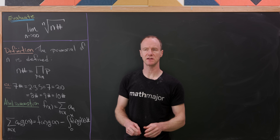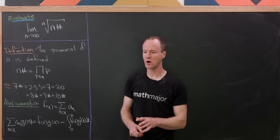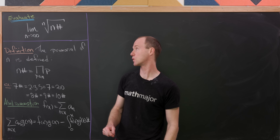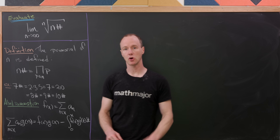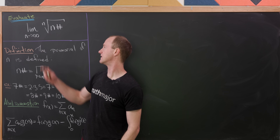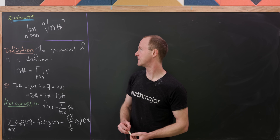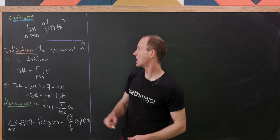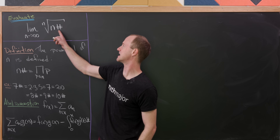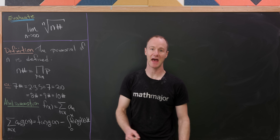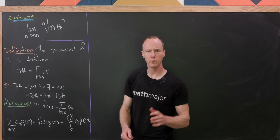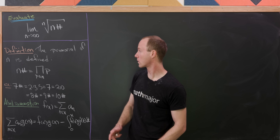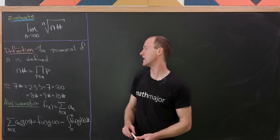Today we're going to look at a really interesting limit that involves a little bit of a generalization of the factorial. Our goal is to find the limit as n goes to infinity of the nth root of n#, which I'll call n pound. And well, what is n pound? It's the primorial of n.